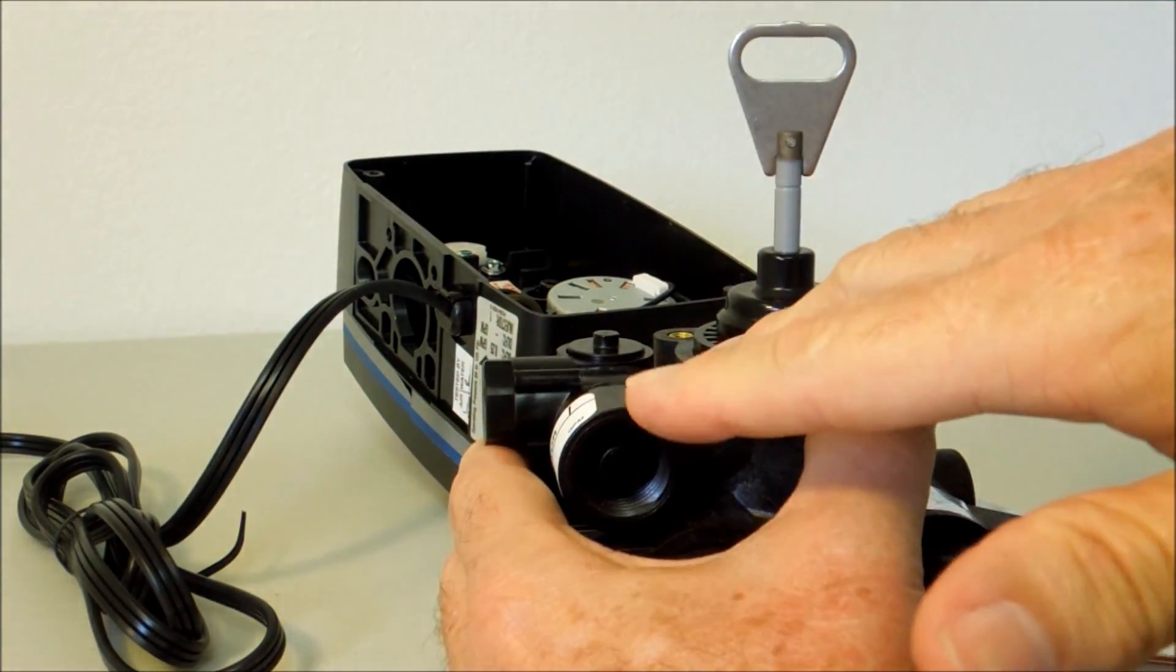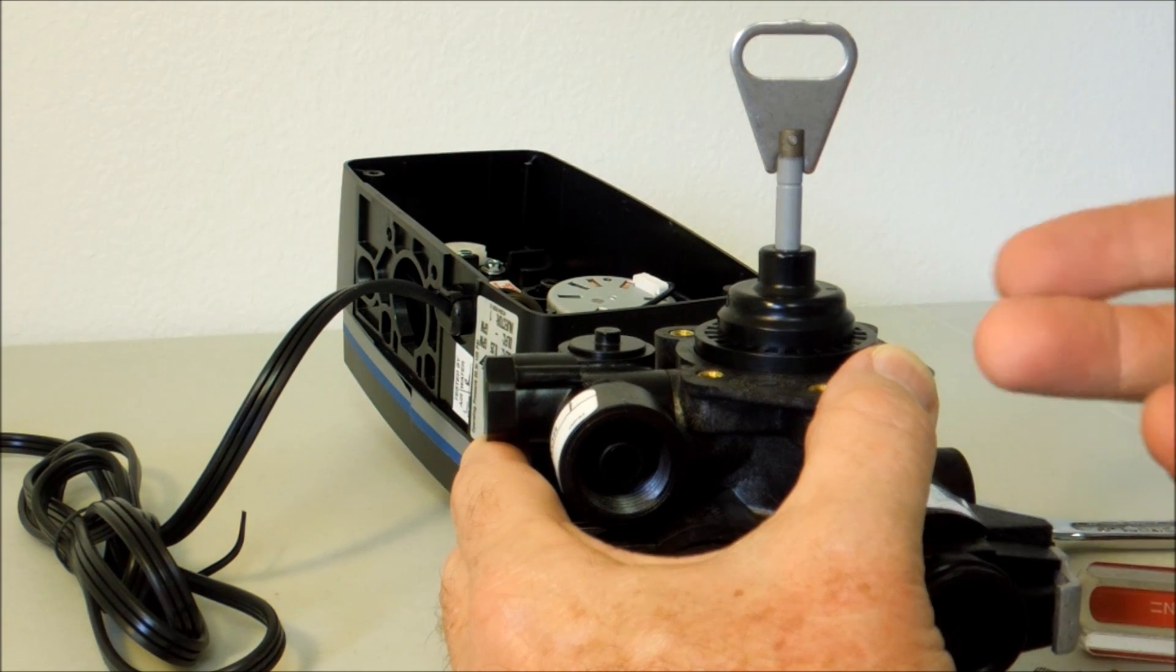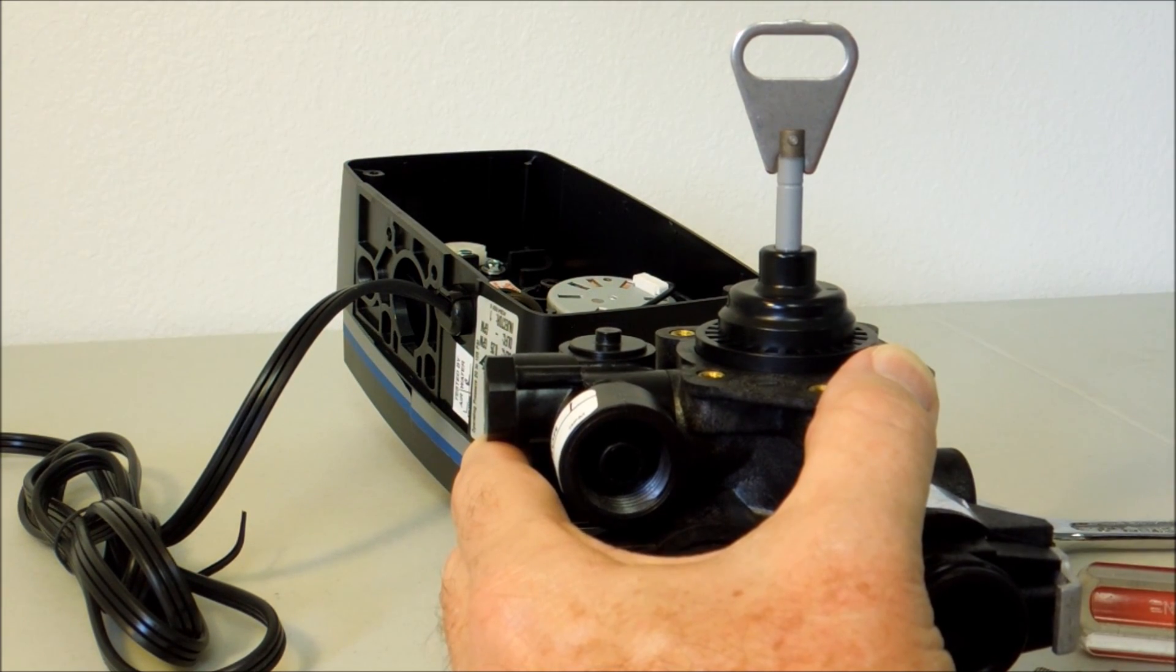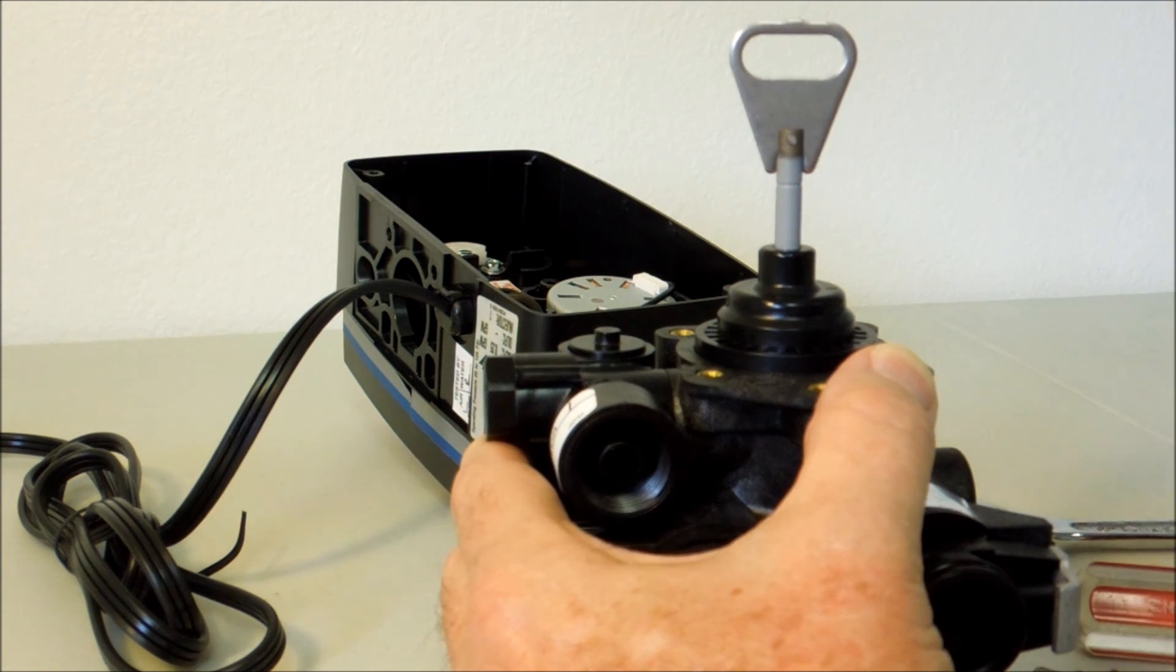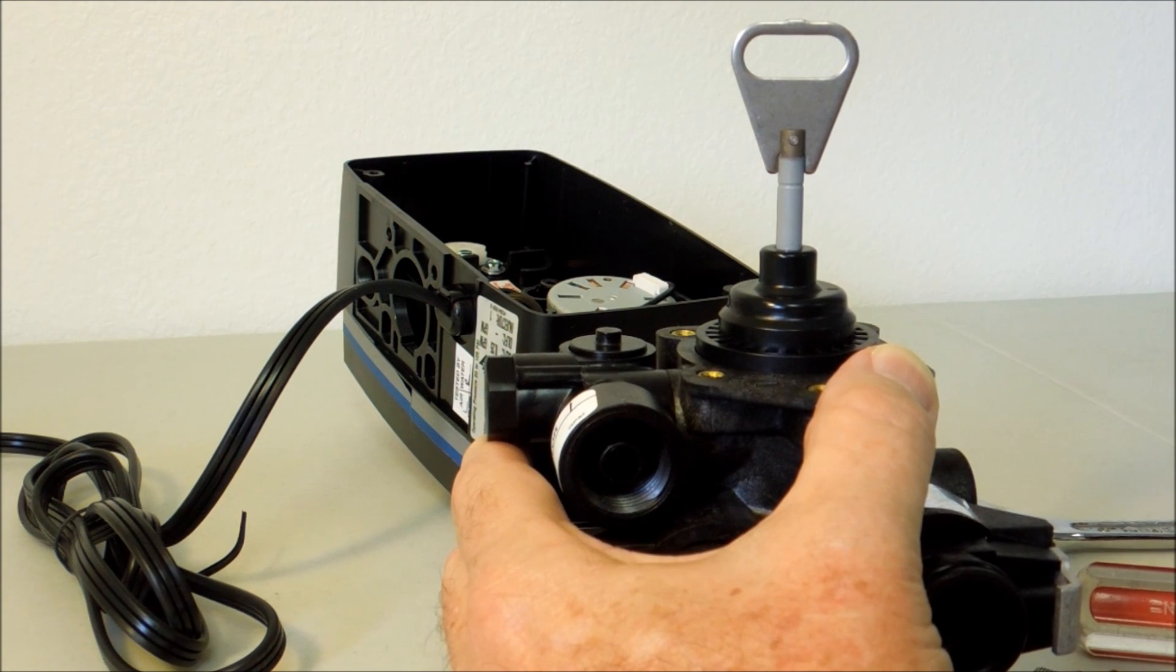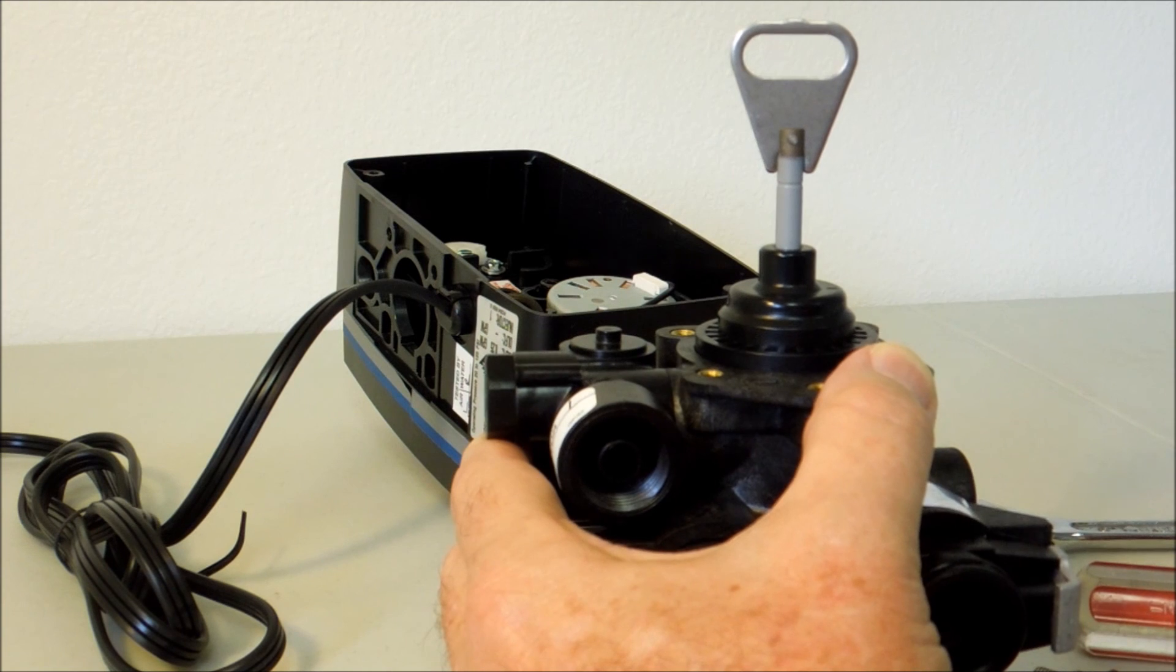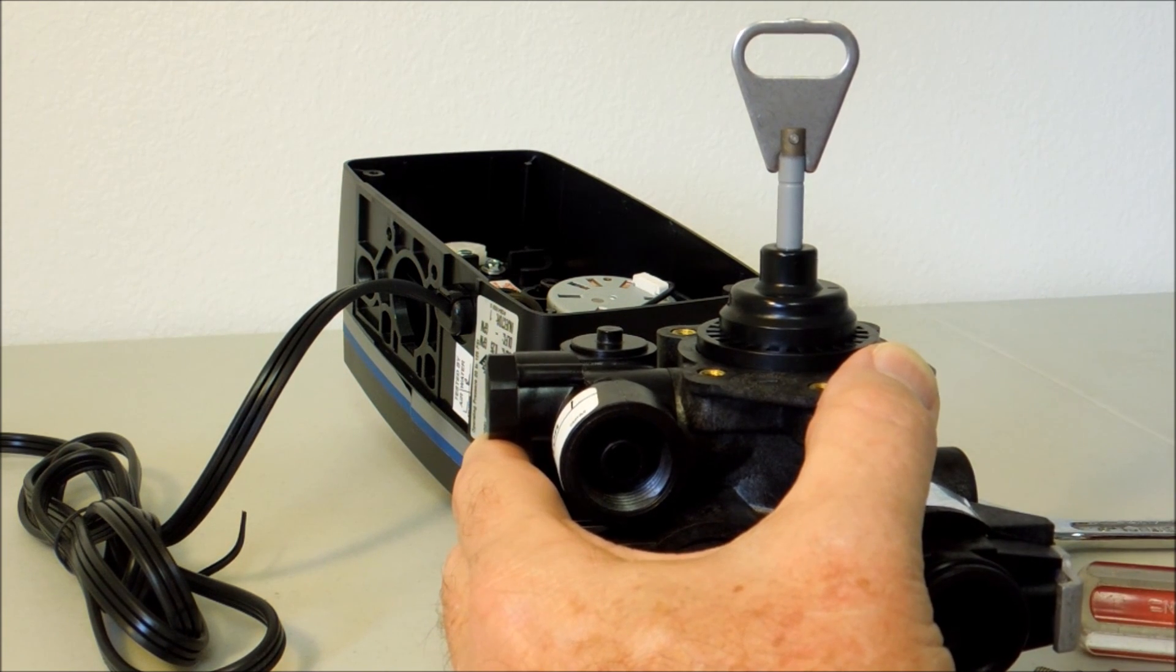And if you have a backwash valve and you want to turn it into a softener, then of course you would do the reverse of everything you just saw me do. You would take out these parts and put in the water softener parts that we just removed. If you have any more questions, email us at support at softenerparts.com and we'll get back to you as soon as we can.